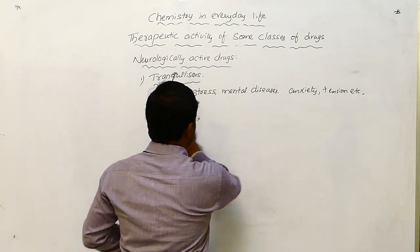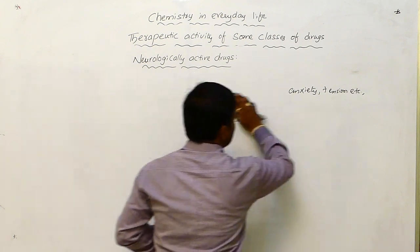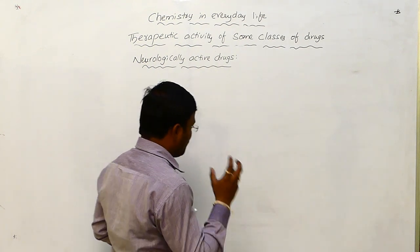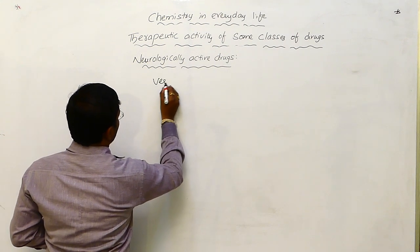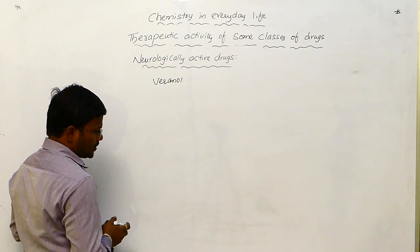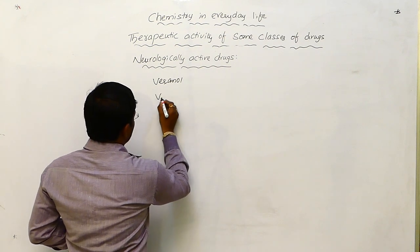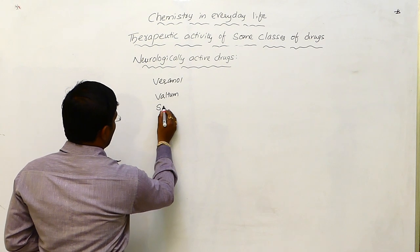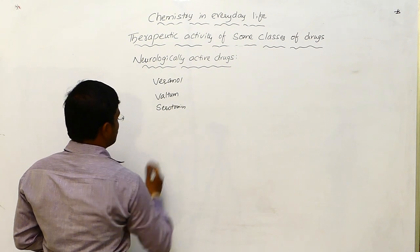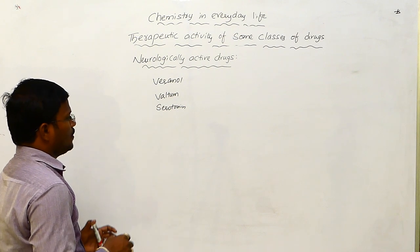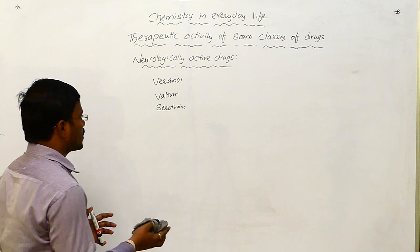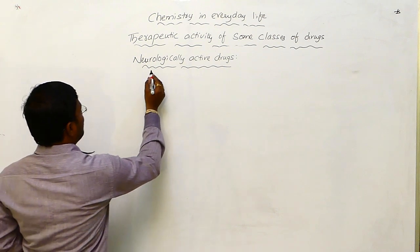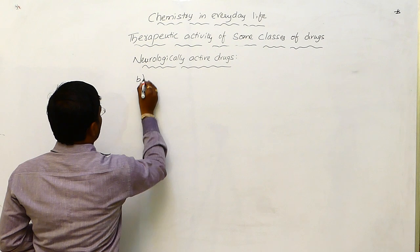Some tranquilizer drugs which are also used to change the mood or mental condition of a person are veranol, valtam, etc. Serotonin is also one of the tranquilizers which shows tranquilizer character. All these can show their activity to overcome mental disorders or improve the ability of a person. Similarly, the second type of neurologically active drugs are analgesics. Generally, these are called as painkillers.